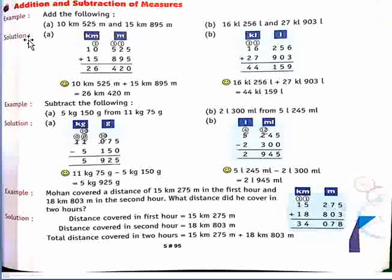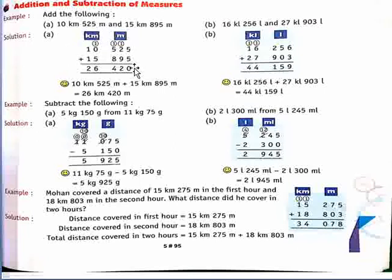In this exercise we do addition and subtraction of measures. See example: 10 km 525 m and 15 km 895 m ko add karna hai. So firstly hum inhe arrange karenge column form mein — km ke niche km likhenge and meter ke niche meter place karenge. Jaise hum apne numbers ko add karte hain, same back side se hum add karna start karenge. 5 plus 5 is 10, so 0 niche likhenge and 1 carry karenge.